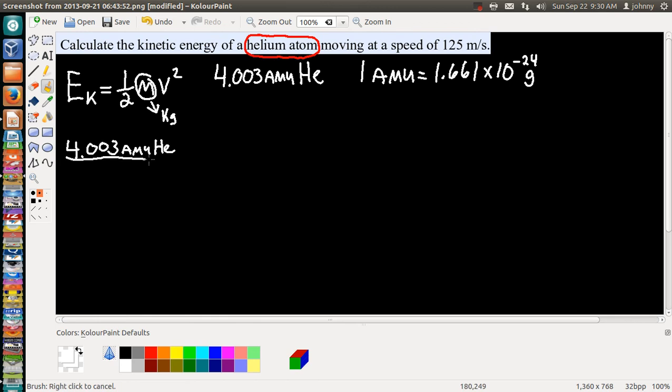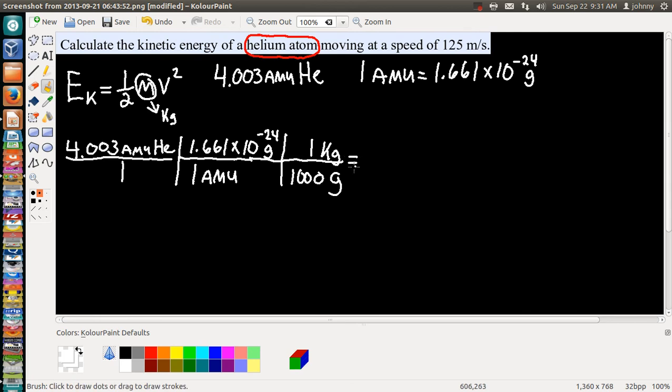We've got 4.003 amu of helium—that's our given. We know that one amu is 1.661 times 10 to the negative 24th grams. That would be great for a single atom of helium if we could just stop right there. However, we have to continue because we need kilograms, so we're going to use another conversion factor. There are 1000 grams in a kilogram.